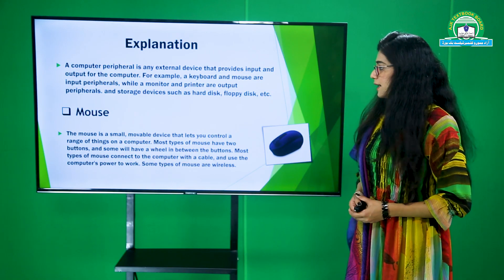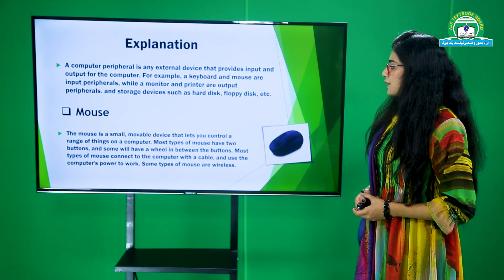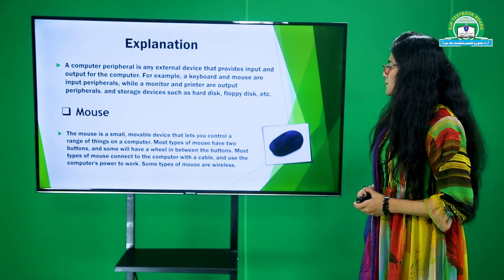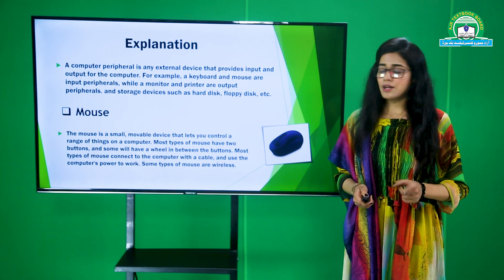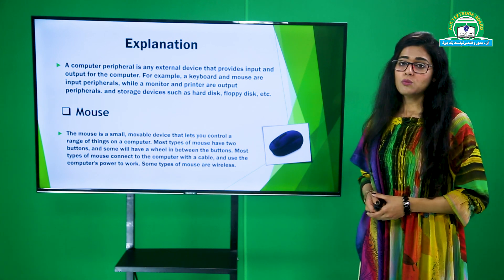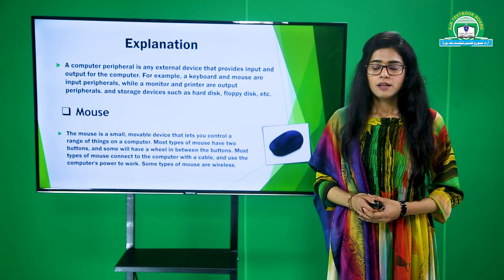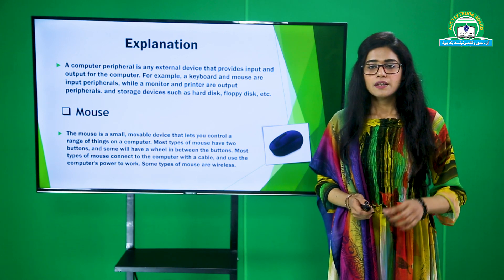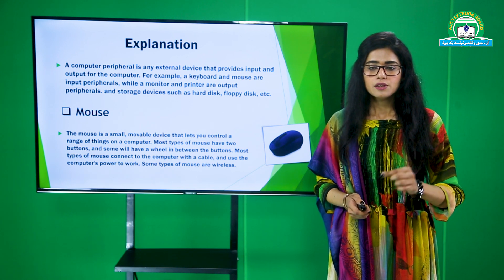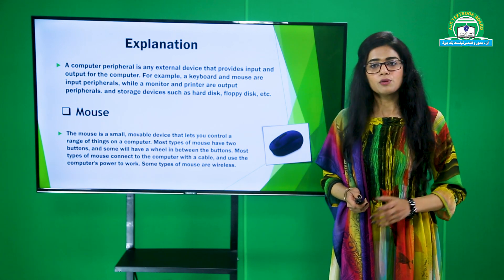Mouse humare paas ek peripheral device hai. This mouse is a small movable device that lets you control a range of things on a computer. Most types of mouse have two buttons and some have a wheel on it. Most types of mouse connect to the computer with a cable, but some types of mouse are wireless. Pehle cable wale mouse use karte thay, lekin ab wireless mouse bhi hai, aur ek choti si pointing device milti hai jo signals catch karti hai. Toh ab do tarah ke mouse available hain: wireless aur with cable.